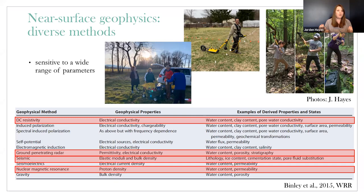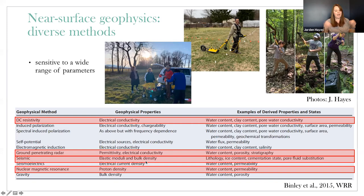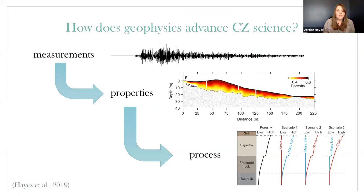For example, with seismic refraction, we might be interested in porosity. What we actually measure — or model — is seismic velocity, and we need a rock physics model to get to the porosity. So oftentimes there are these indirect pathways to get towards that property of interest.